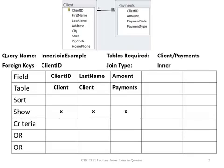The default join type in Access is an inner join. So if you want to use an inner join, you only have to pull the tables up and the lines will be there. 99% of the time when you show tables in your QBE grid, there will be a line connecting them. For a query to work correctly, all tables have to be joined directly or indirectly, so make sure that you have lines set up.